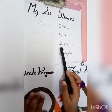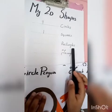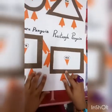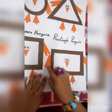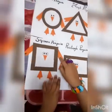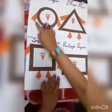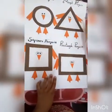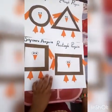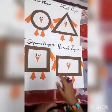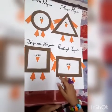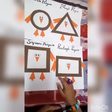Let's count rectangles — one, two, three, four, five, six, seven, eight, nine. We have total nine rectangles.